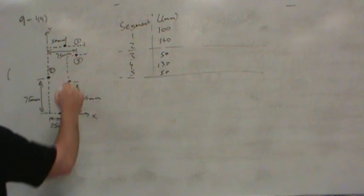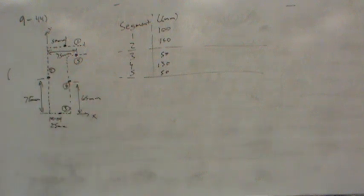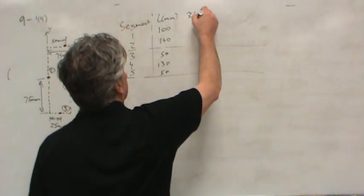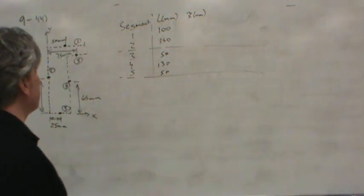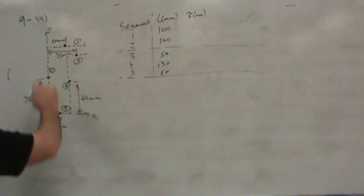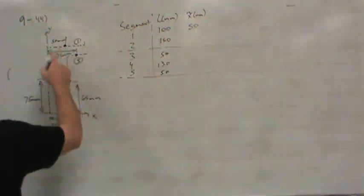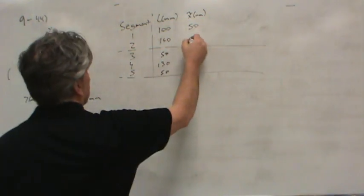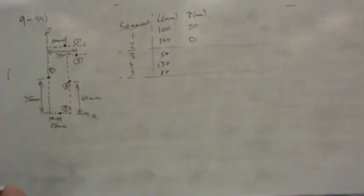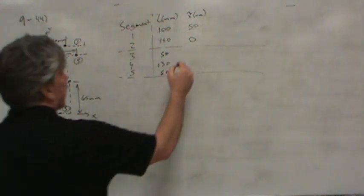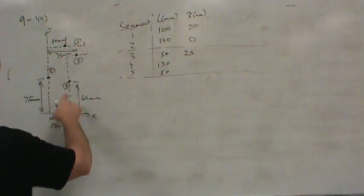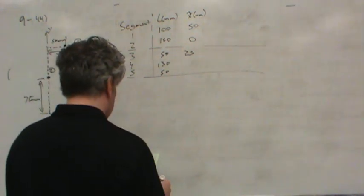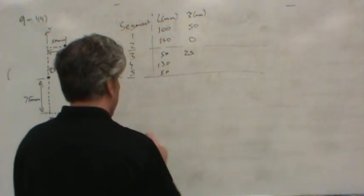Now the location of the centroid x-tilde in millimeters of each of these segments is pretty easy to determine. X-tilde is over at 50 millimeters for segment one. And for segment two, well it's at zero millimeters, because it's right on the y-axis. Segment three is over at 25 millimeters. Segment four is over at 50 millimeters.